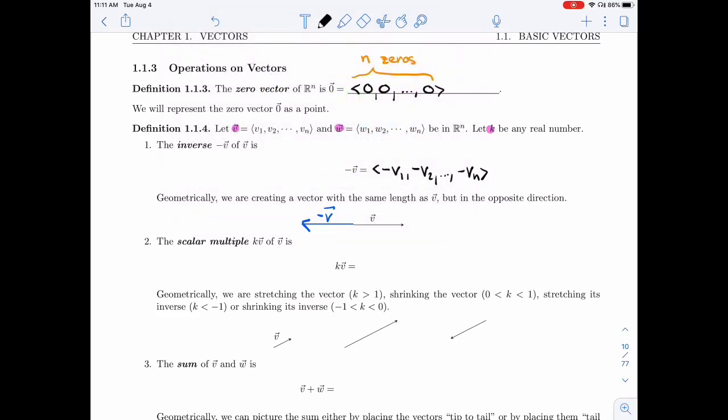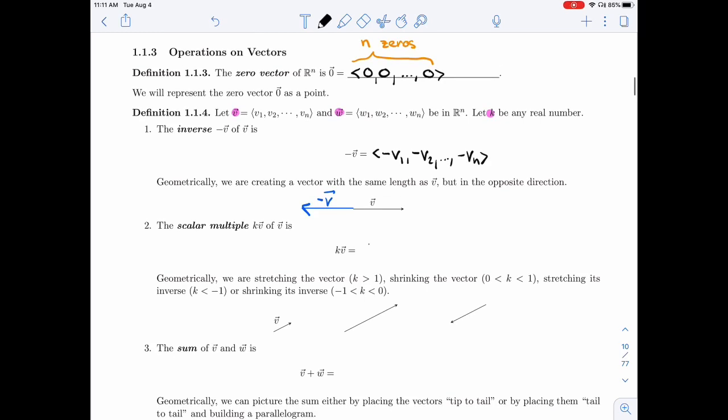Like we saw in the first video, a scalar multiple, something like 2V, here I write KV. To get this one, all you have to do is multiply the components of V by K, like this. Now, depending on K, geometrically, it will mean different things.